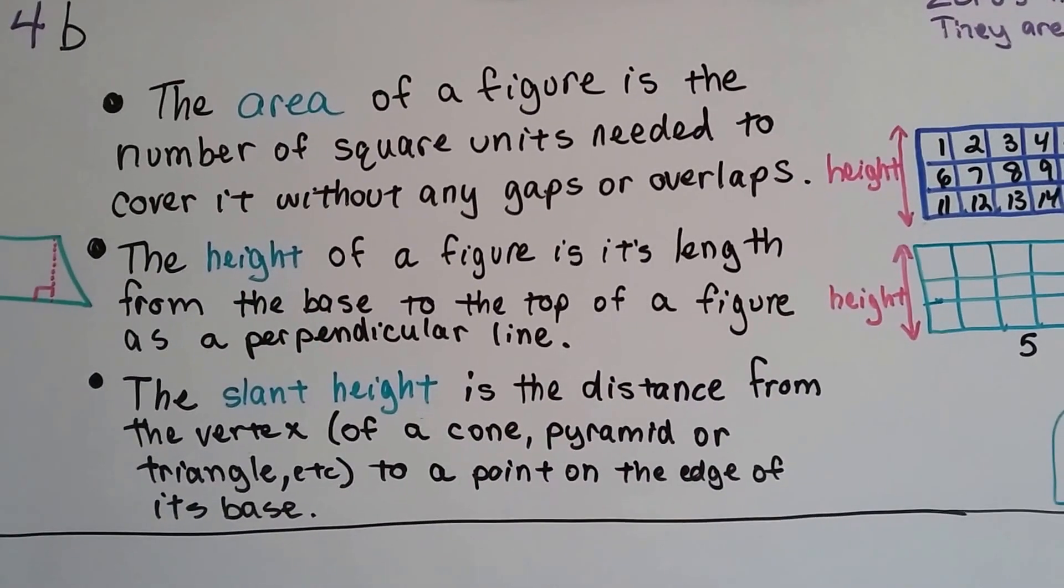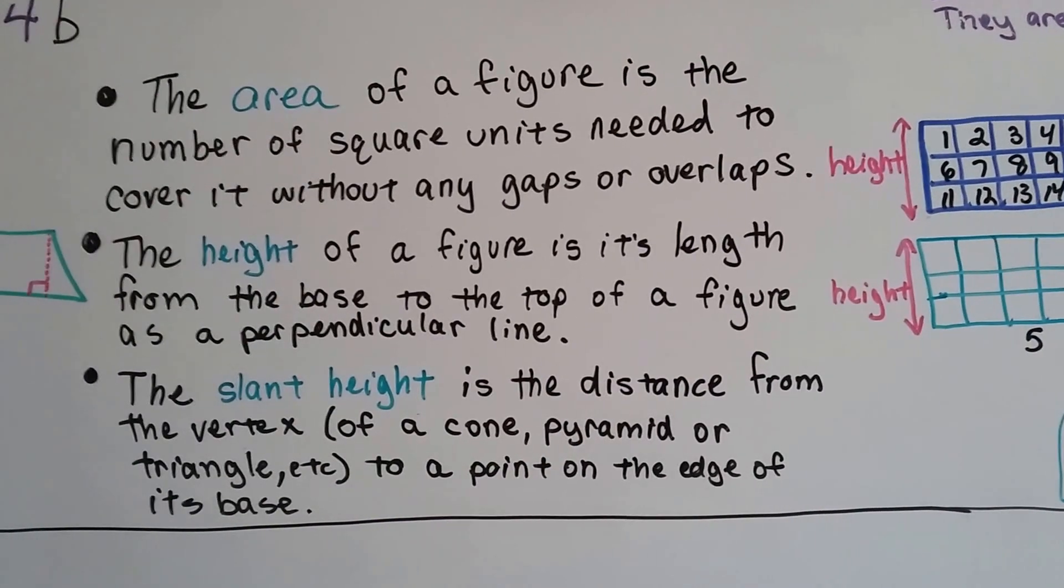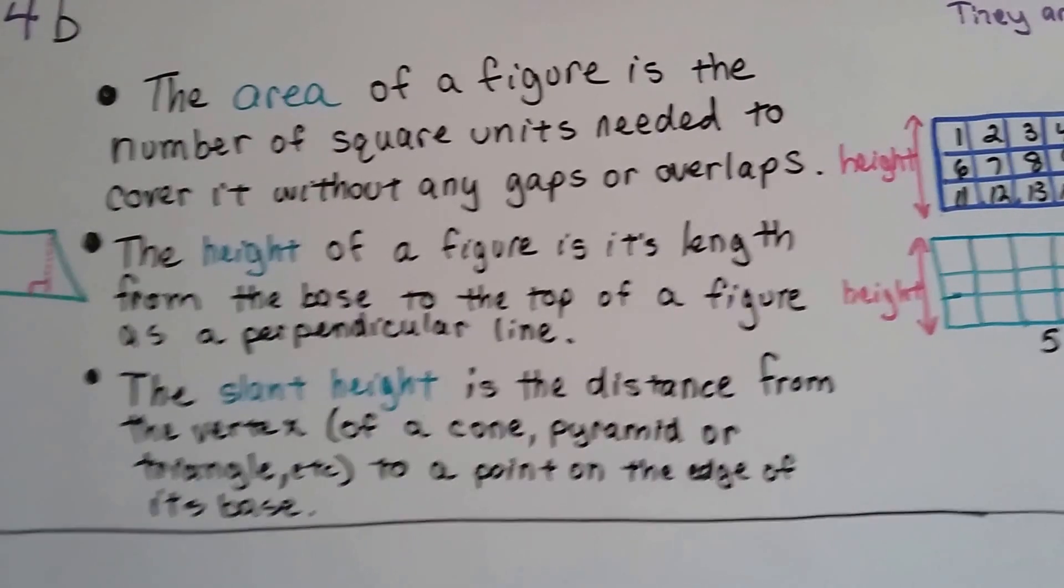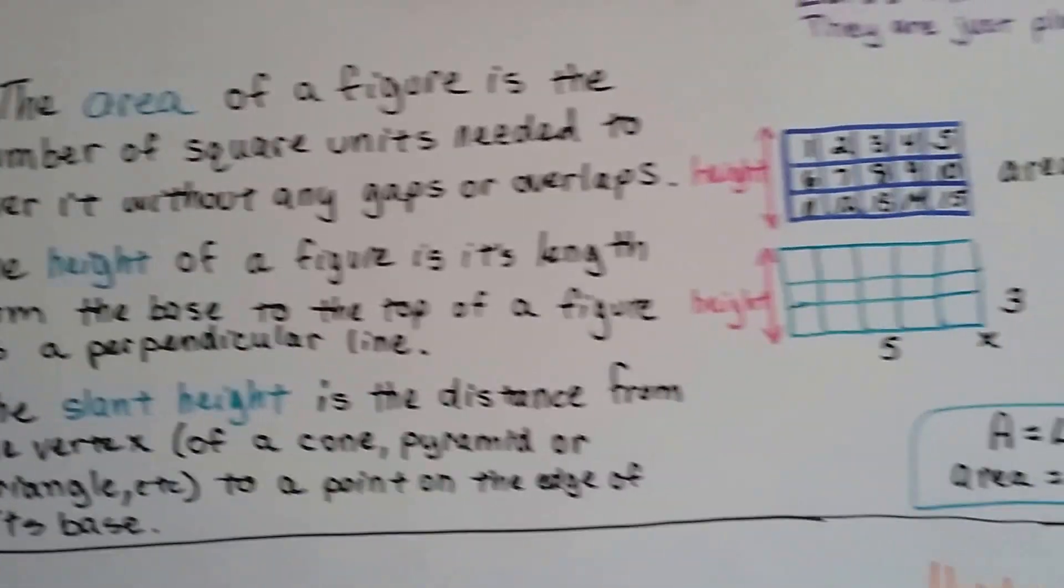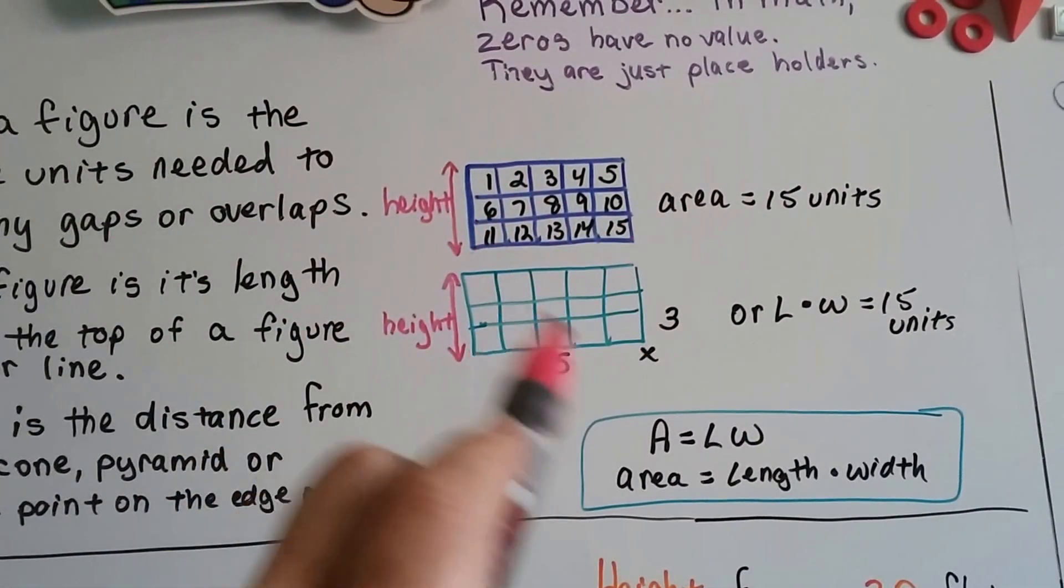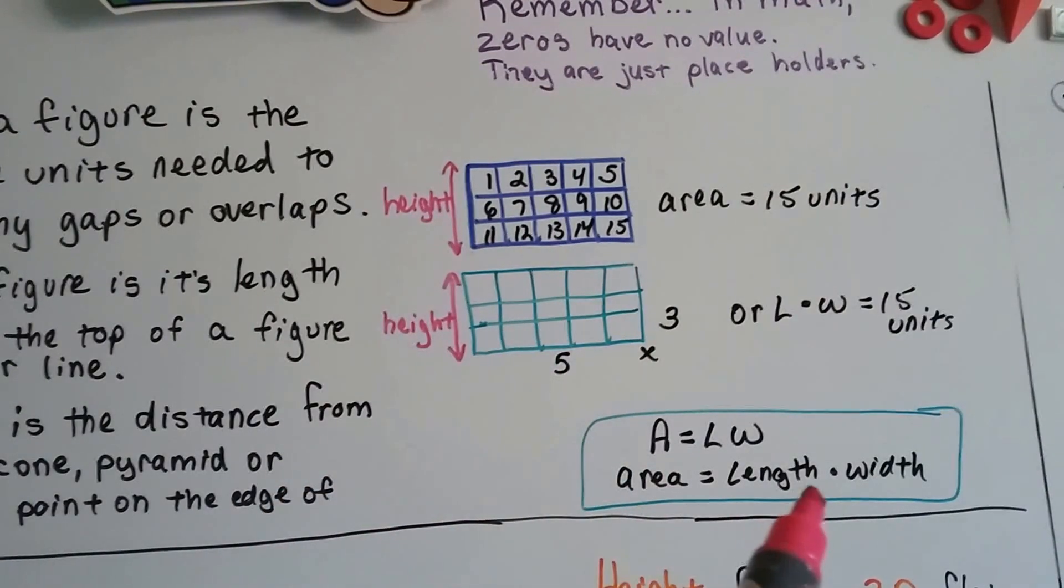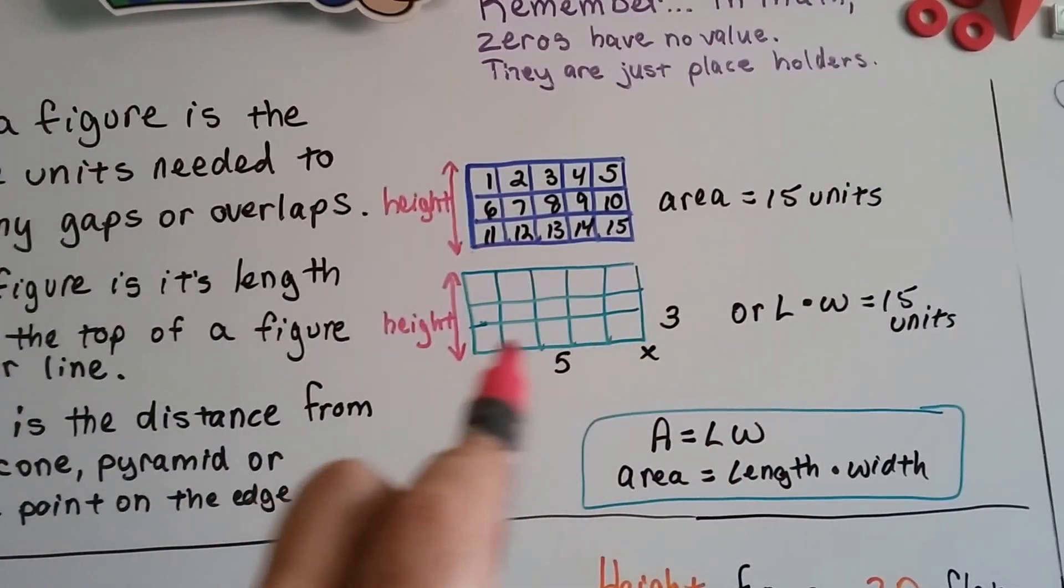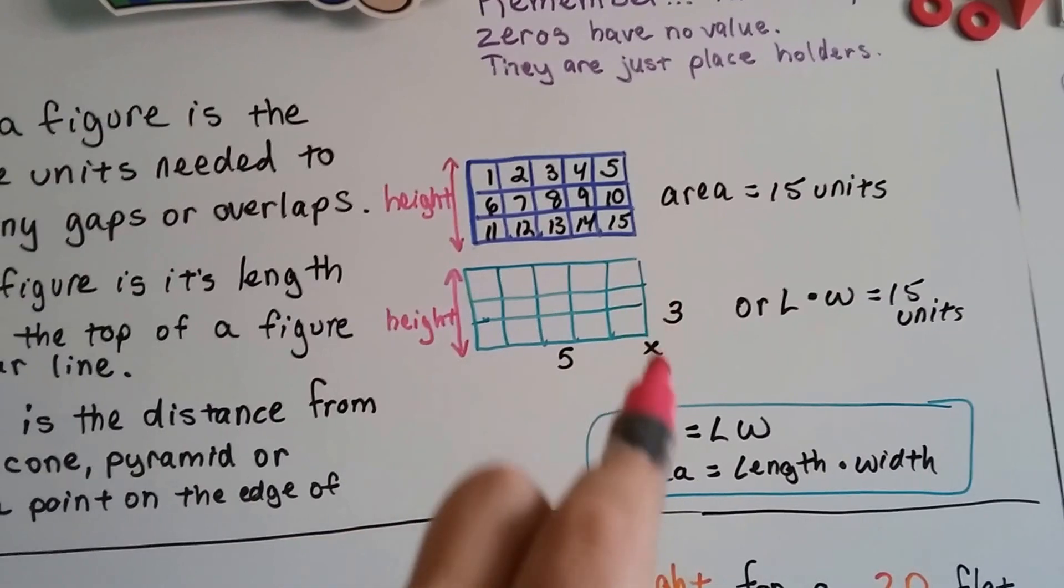A slant height is a distance from a vertex of like a cone, a pyramid, or a triangle to a point on the edge of its base. So to find the area, the flat measure is just the length times the width. The length multiplied by the width.